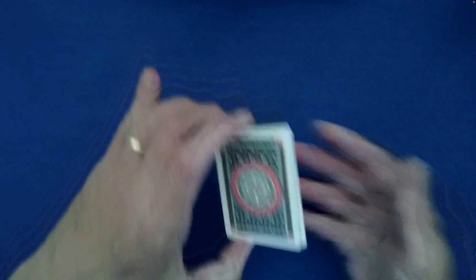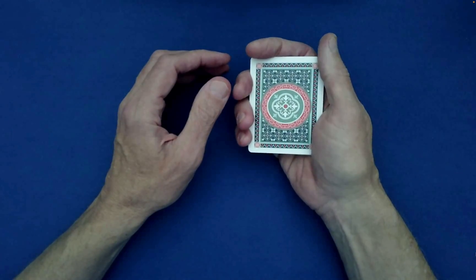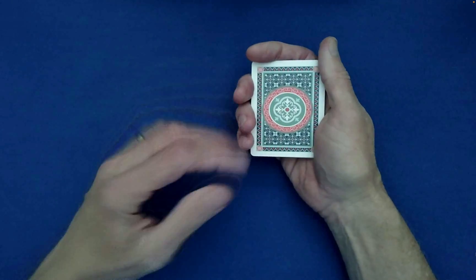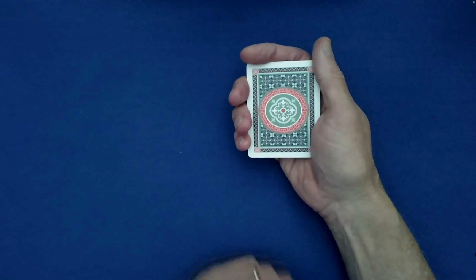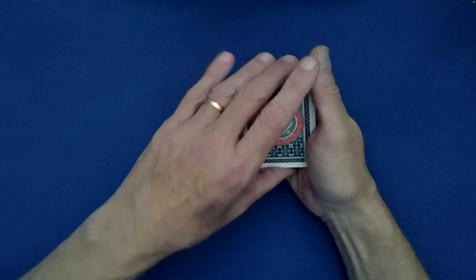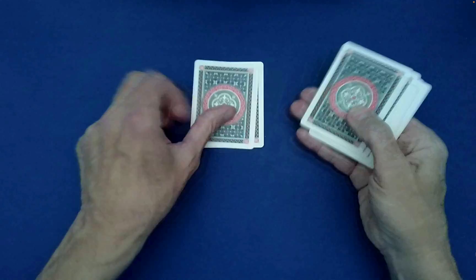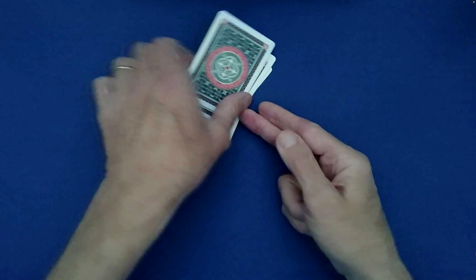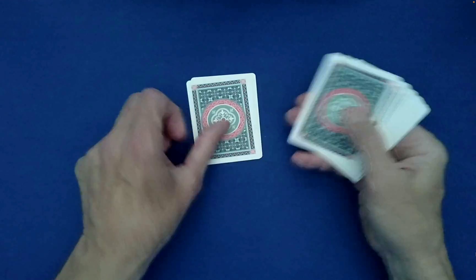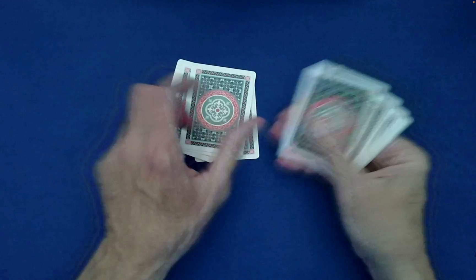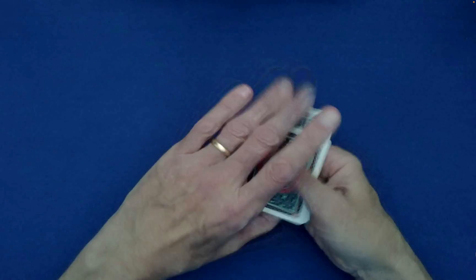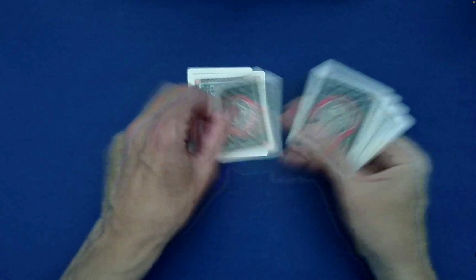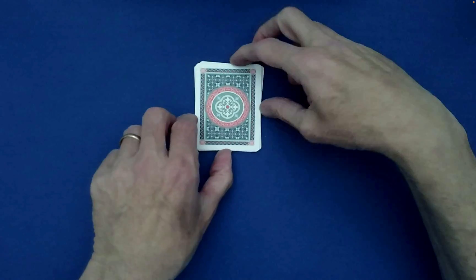You as the performer simply pick up the packet and explain to the spectator that you're going to spell out 'happy birthday card trick.' H-A-P-P-Y, birthday B-I-R-T-H-D-A-Y, card C-A-R-D, trick T-R-I-C-K. Happy birthday card trick.